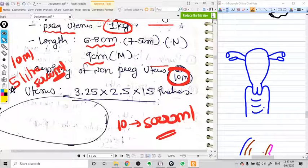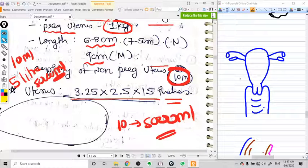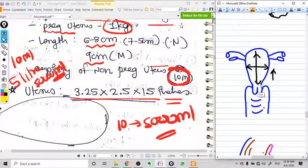The normal measurements of the uterus vary from patient to patient, and size varies from patient to patient. But still we have some rudimentary sizes like 3.25 x 2.5 x 1.5 inches, when we talk about the length, the width, and the thickness.